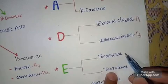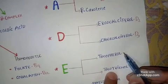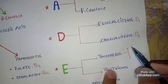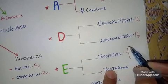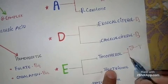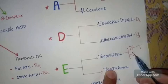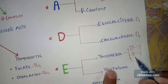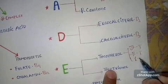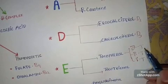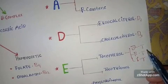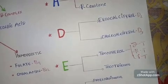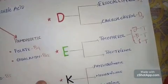Vitamin E has two forms: tocopherol and tocotrienol. Tocopherol is further divided into three forms: alpha-tocopherol, beta-tocopherol, and gamma-tocopherol. Alpha-tocopherol is the most active form.